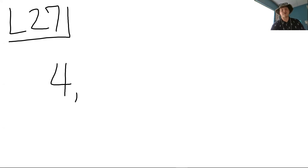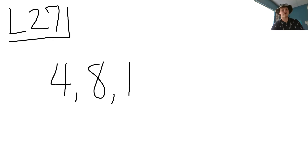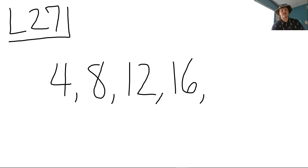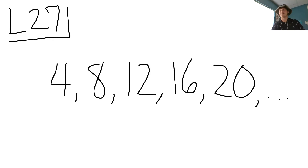multiples of four — we'd start out with four because four times one is four. And then four times two is eight, four times three is 12, four times four is 16, four times five is 20, so on and so forth. We could keep going on forever and ever. So those would be the multiples of four.